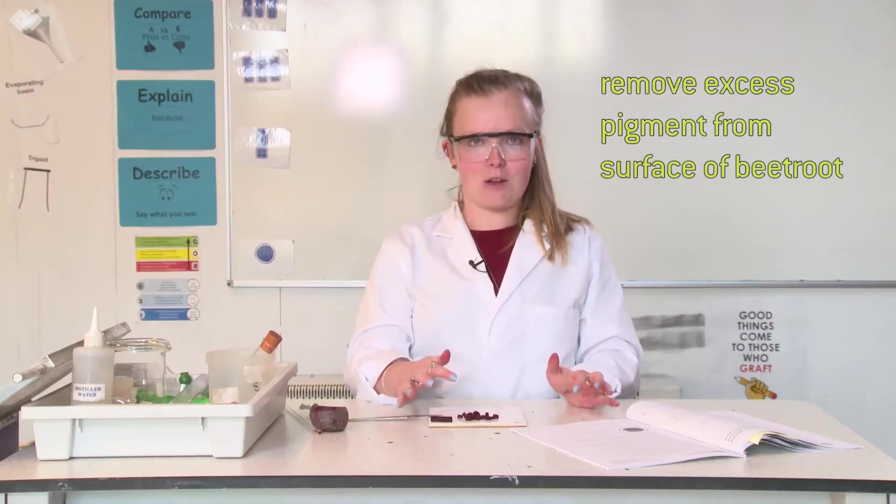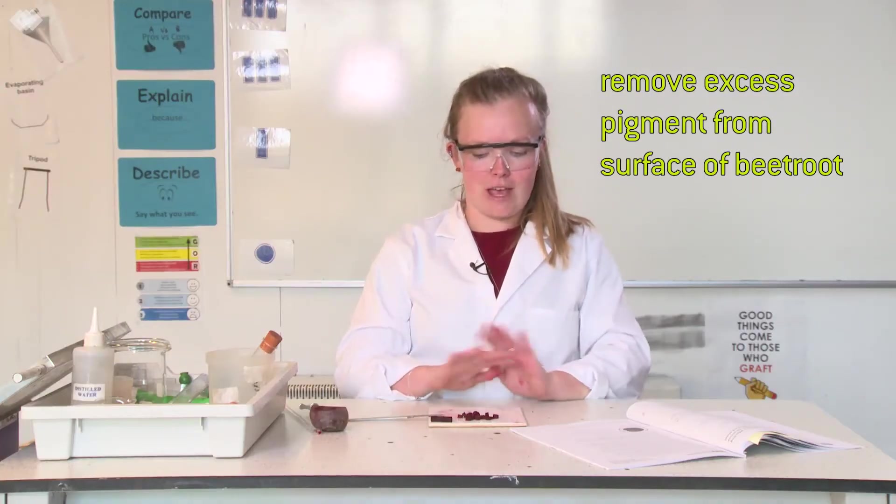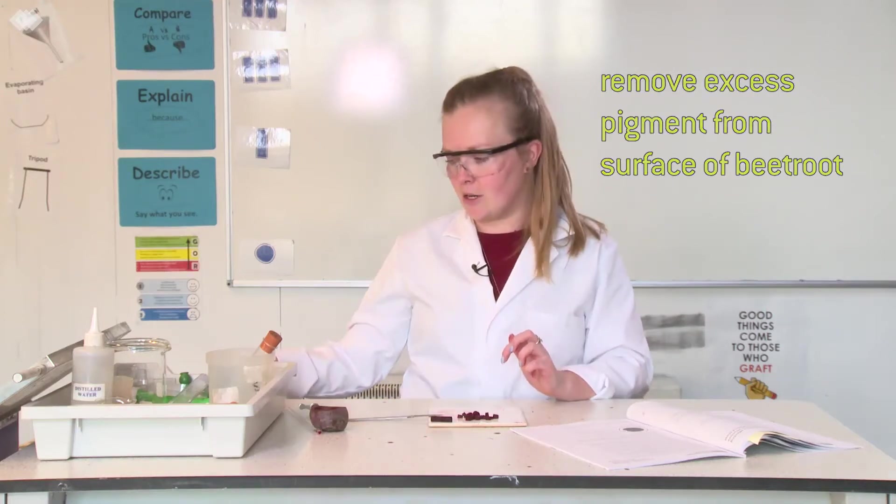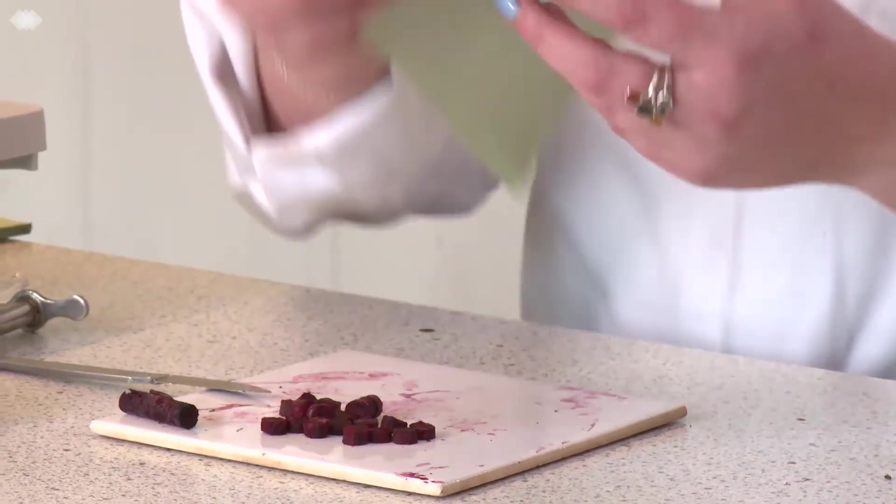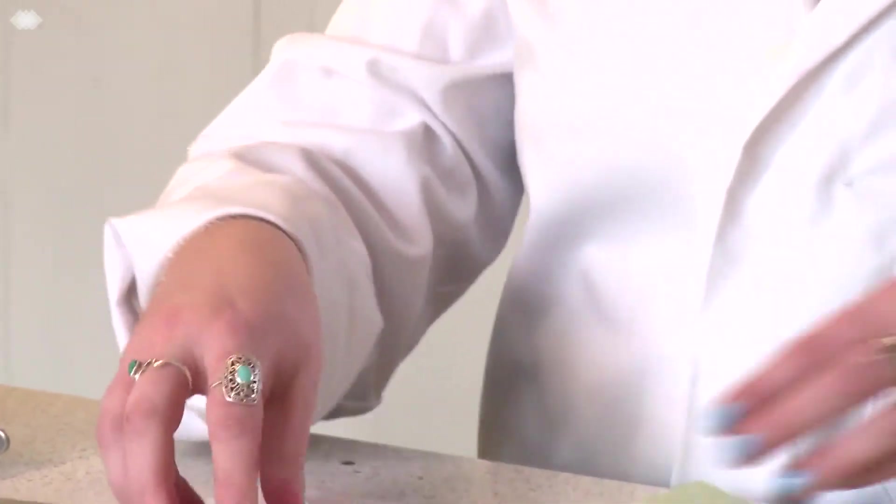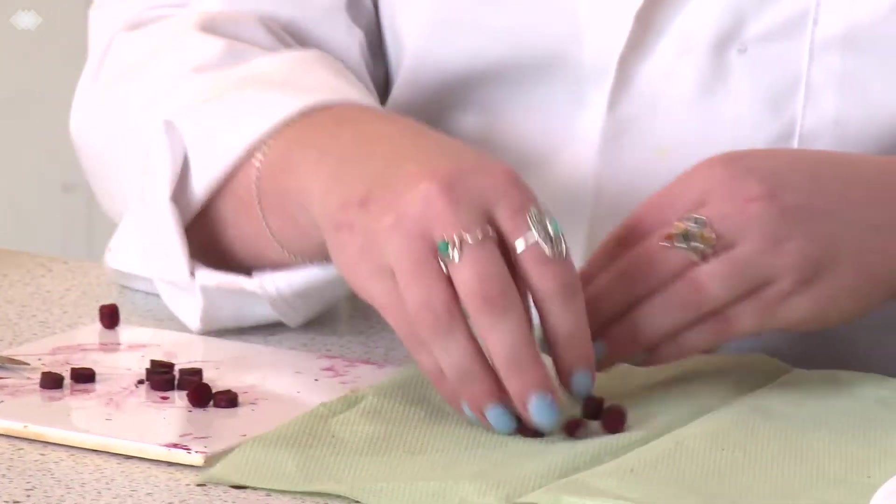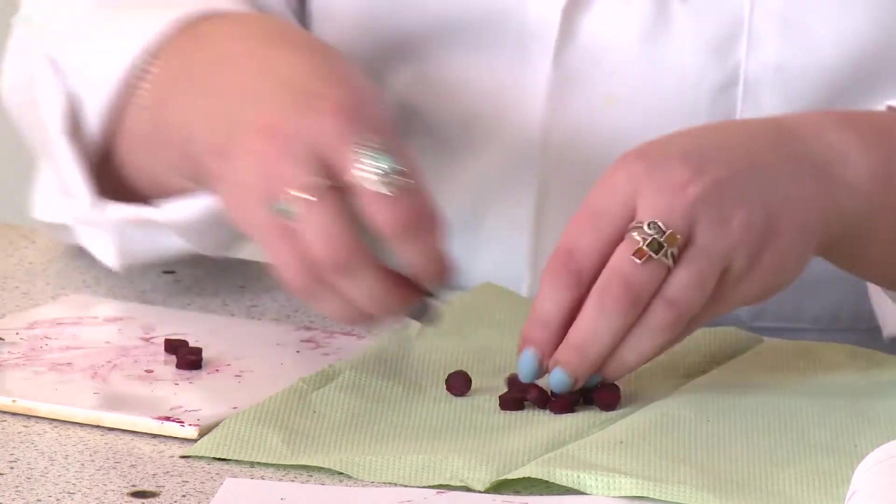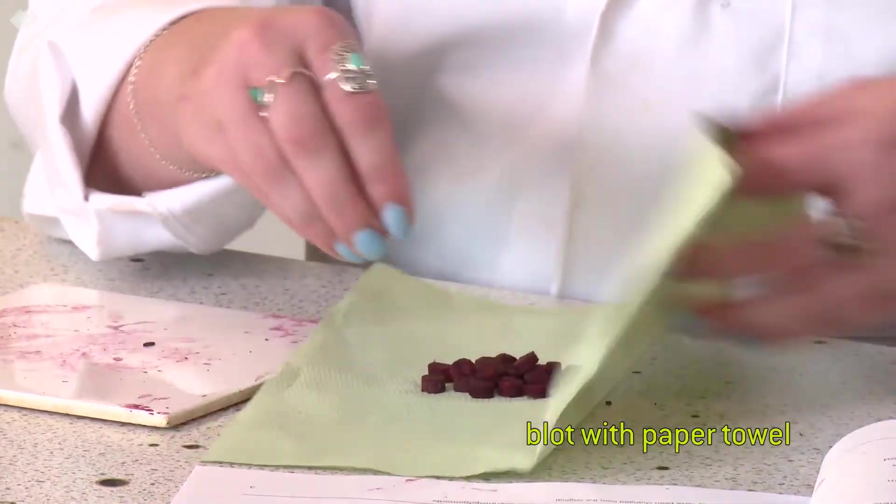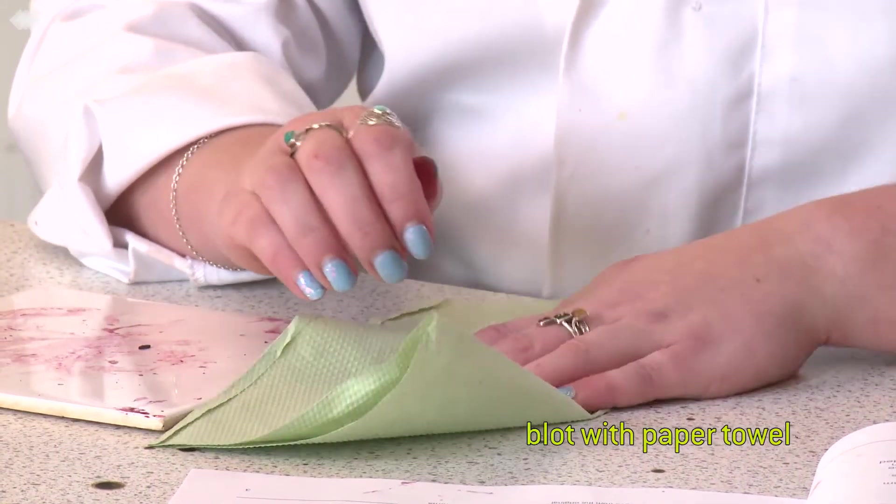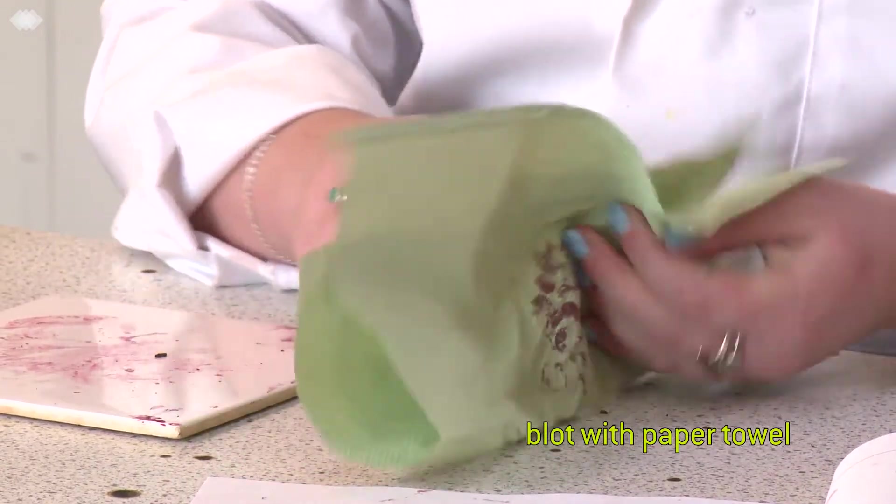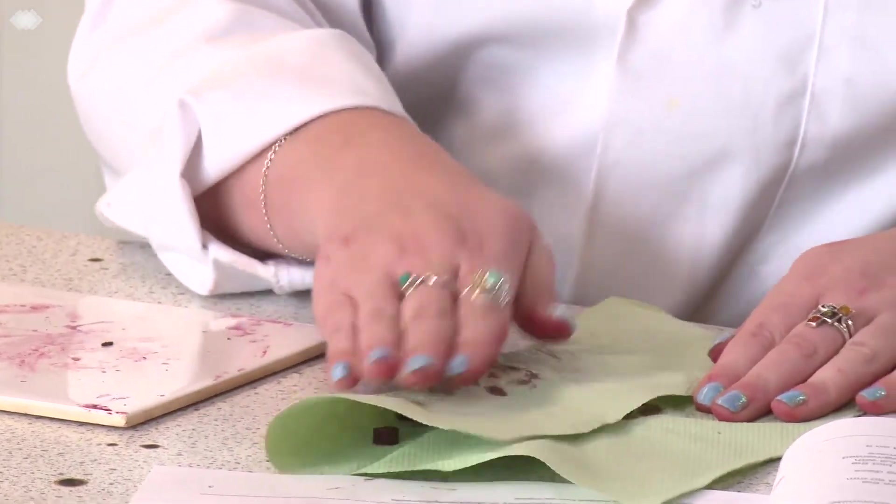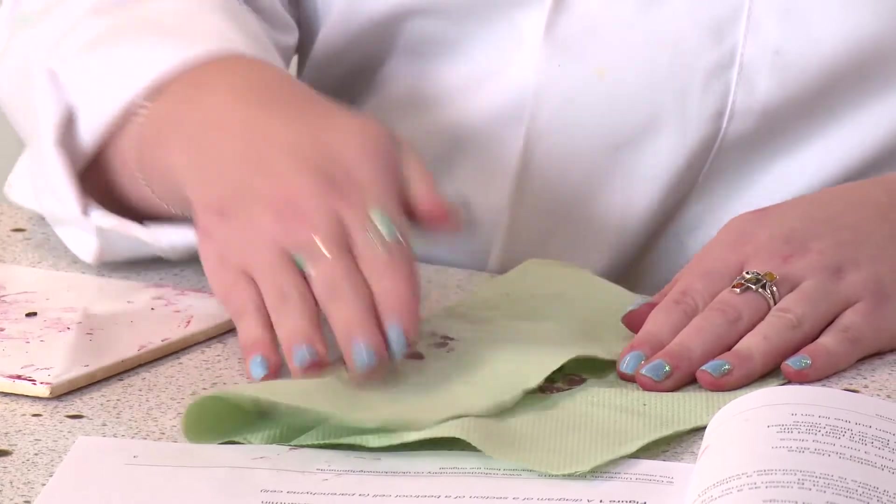Once you've got 21 of your discs, you need to remove any of the pigment from around the outside, as that will affect your results. To do this, first blot them with a paper towel.